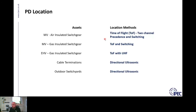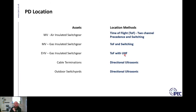On gas insulated switchgear at the EHV level, we can use time of flight with UHF sensors — typically between two UHF monitoring points, whether on a barrier, a window, or a pre-existing internal UHF sensor. You typically need a much higher frequency time of flight system because of the frequency response of the UHF sensors, and so it's often done with an oscilloscope or portable equipment.